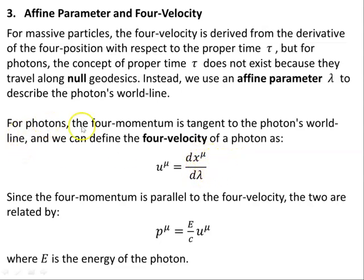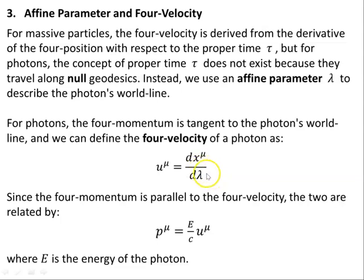We use lambda to describe the photon's world line, so x mu of lambda. For photons, the four-momentum is tangent to the photon's world line, and we can define the four-velocity of a photon as u mu equals dx mu d lambda. Now since the four-momentum is parallel to the four-velocity — they point in the same direction — the two are related by p mu equals E on c times u mu, where E is the energy of the photon.